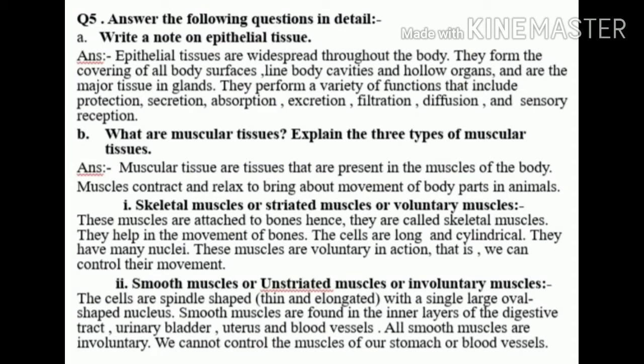Number two: Smooth muscles, or unstriated muscles, or involuntary muscles. The cells are spindle-shaped, thin, elongated, with a single large oval-shaped nucleus. Smooth muscles are found in the inner layer of the digestive tract, urinary bladder, uterus, and blood vessels.